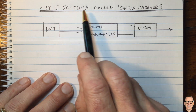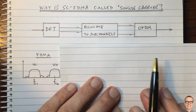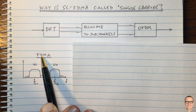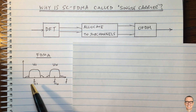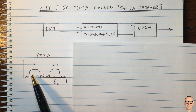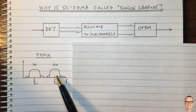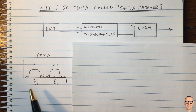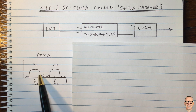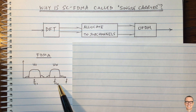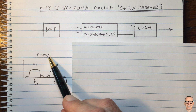Let's think about what FDMA is. Here's a frequency picture of FDMA — Frequency Division Multiple Access. In this system, different users are given different portions of the frequency band. They are quite distinct sections of frequency, and they each have their own carrier waveform, which they use to modulate and demodulate those users. So this is a multi-carrier multiple-access system.